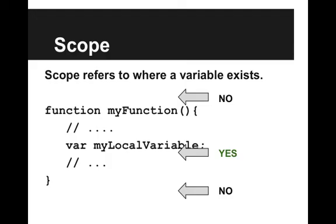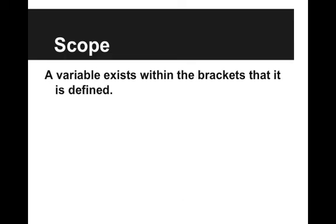The answer for the first one is no. It doesn't exist at the top because we are not in the function. The answer to the second one is yes, that variable does exist inside that function. And the answer to the third one is no, when we leave that function it no longer exists. And as a general rule, a variable exists within the brackets that it is defined.